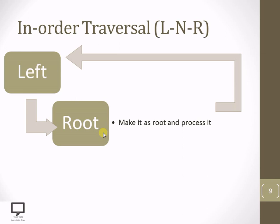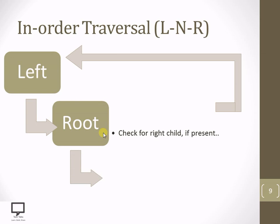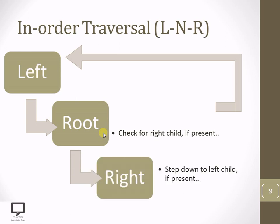And after processing it, let's check whether this current root is having a right child or not. If it is present, we are supposed to move or step down to the right child of the current root, and then let's again check whether that current right child — which is now currently a root — is having its left child or not.